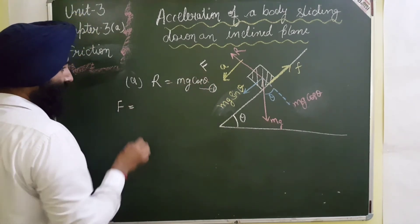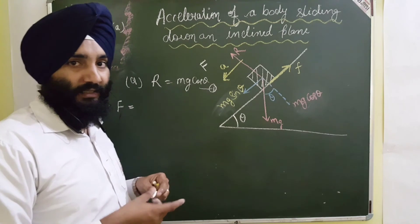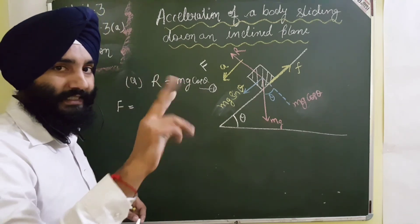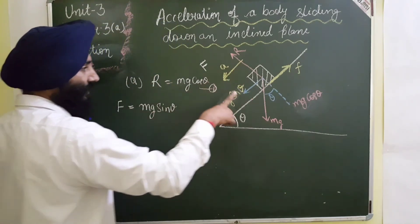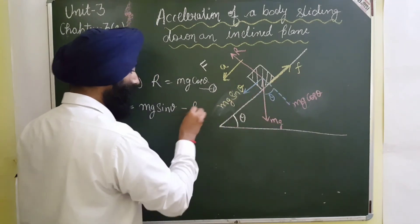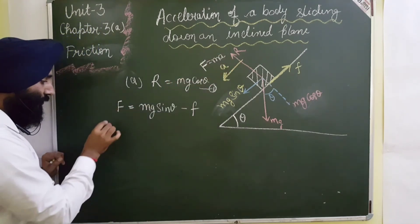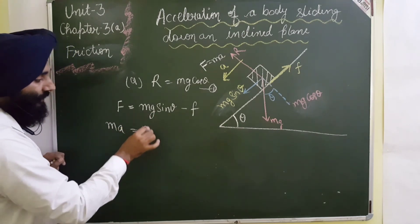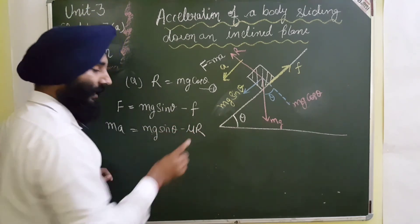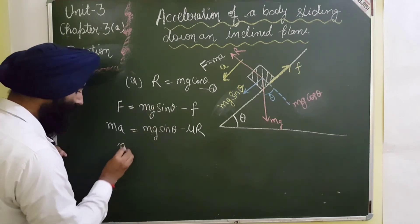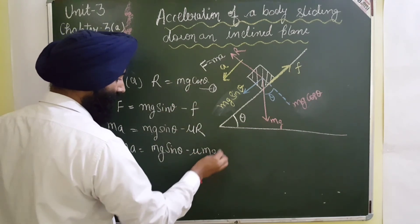The net force in the direction of motion is what drives the acceleration. In the direction of net force, we have Mg sin θ acting downward along the incline. Net force F equals mass times acceleration: F = MA. So MA equals Mg sin θ minus the frictional force μR. Substituting R equals Mg cos θ, we get MA equals Mg sin θ minus μMg cos θ.